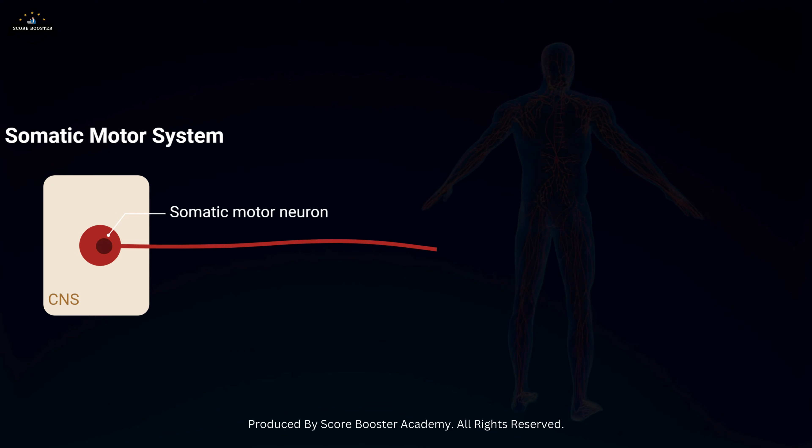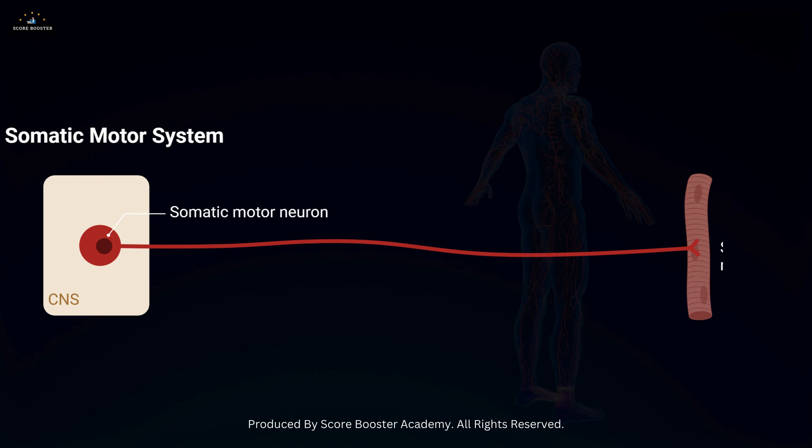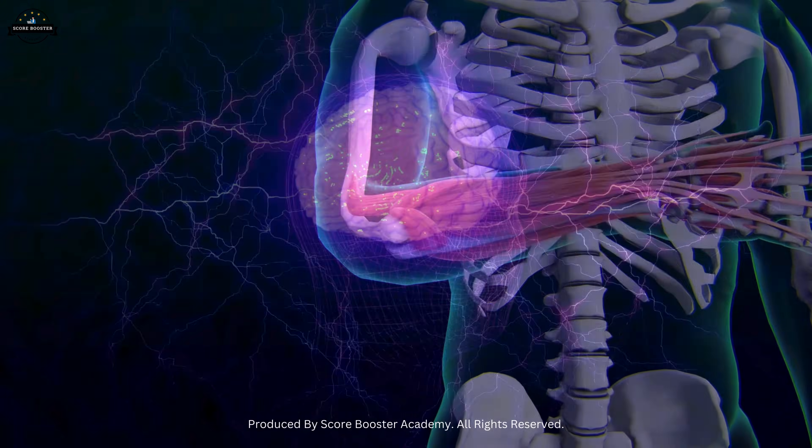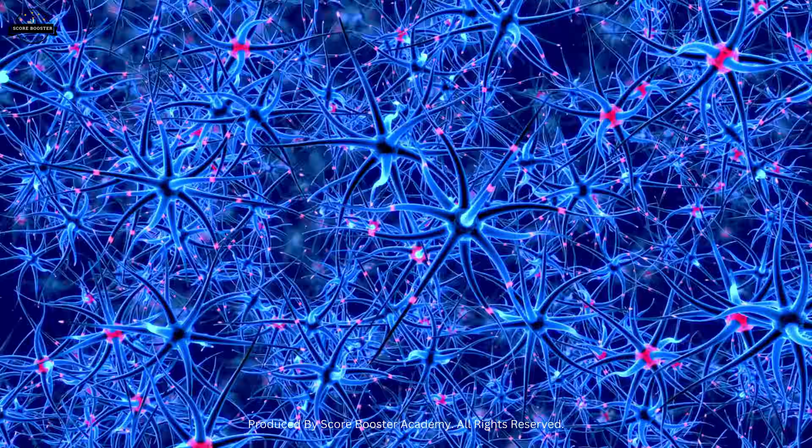The somatic nervous system manages voluntary movements by controlling skeletal muscles. When you decide to lift your arm, motor neurons in the somatic nervous system send signals from the brain to the arm muscles.